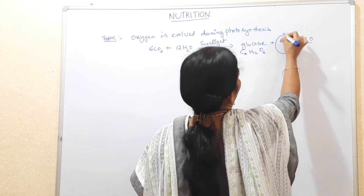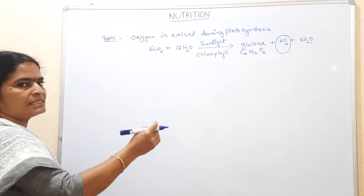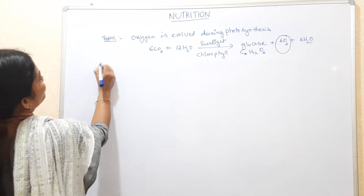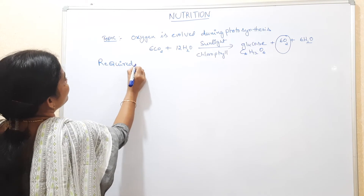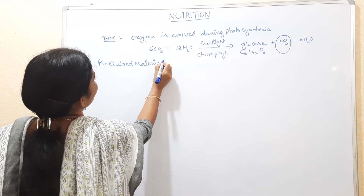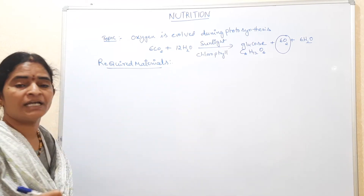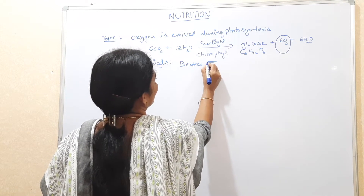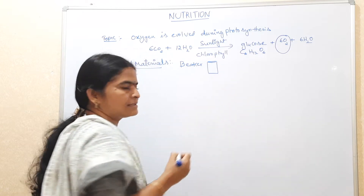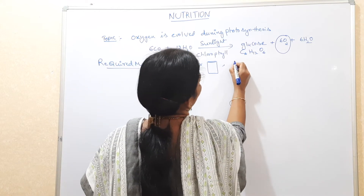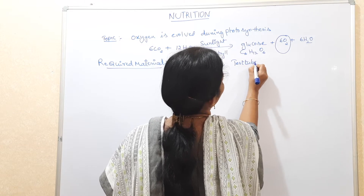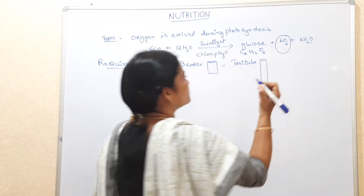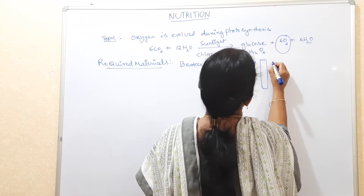Which gas evolves? Oxygen. Today, to find out whether oxygen is evolved or not during photosynthesis, we will do an experiment. The required materials are: a beaker — a transparent glass beaker — next a test tube, which is also glass, a little long narrow tube, and a funnel.